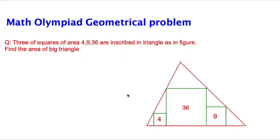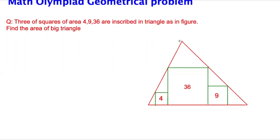Bismillah rahman raheem, assalamu alaikum. Hi guys, today I will solve another math olympiad geometric problem. Please subscribe to my channel and press the bell icon to watch more new challenging questions. The question: three squares of area 4, 9, and 36 are inscribed in a triangle as in the figure. Find the area of the triangle. We name the triangle vertices A, B, and C.